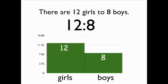In this class, there are also 12 girls to 8 boys for a total of 20 students. The ratio is 12 to 8. The bar on the left represents the 12 girls. The bar on the right represents the 8 boys.